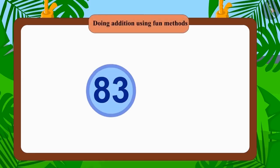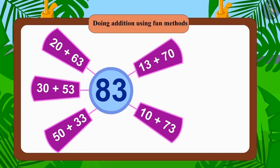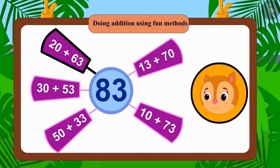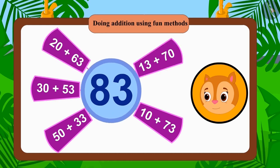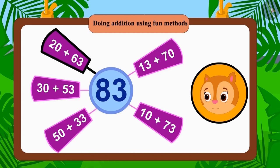Yes children, any number can be represented by the addition of different pairs of numbers. Chanda can build her house with 83 thin twigs choosing different combinations of green and brown twigs. Can you split this number in more ways?